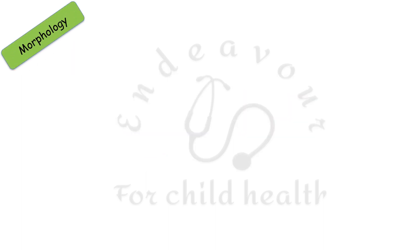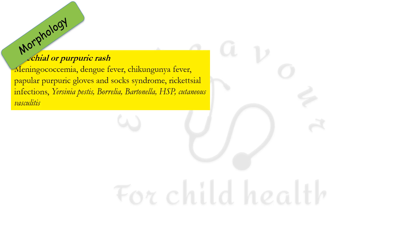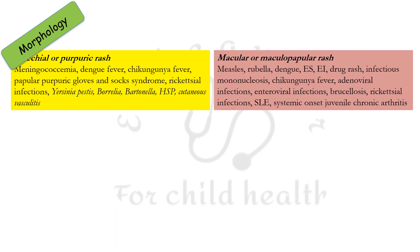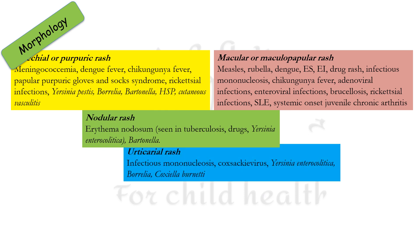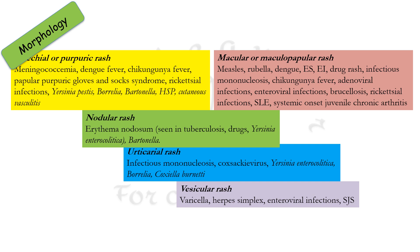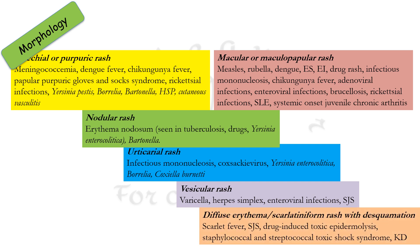Depending on the morphology, the various causes of different kinds of rash are: causes for petechial or purpural rash, causes for macular or maculopapular rash, causes for nodular rash, urticarial rash, vesicular rash, and finally diffuse erythema, also referred to as scarlatiniform rash with desquamation.